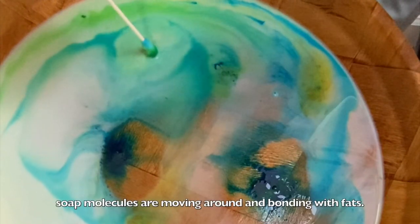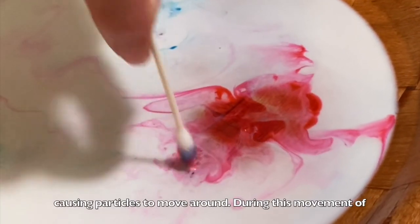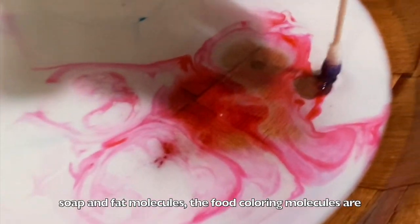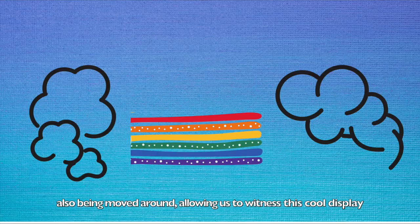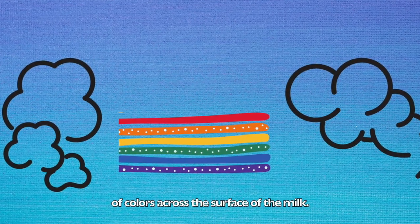So when we put the soap in the milk, soap molecules are moving around and bonding with fats, causing particles to move around. During this movement of soap and fat molecules, the food coloring molecules are also being moved around, allowing us to witness this cool display of colors across the surface of the milk.